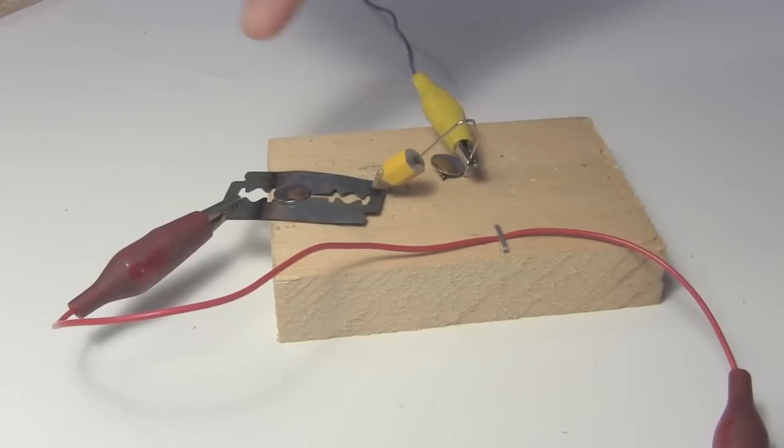What you'll be making is something like this. This is a razor blade right here, and part of the razor blade has been blued. It has a coating of iron oxide on it, and I'll show you how to do that.